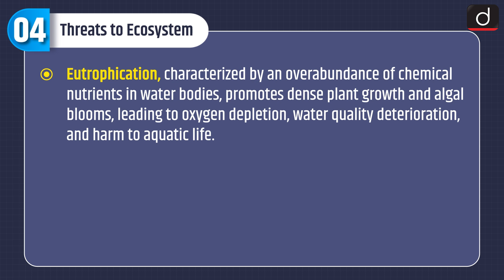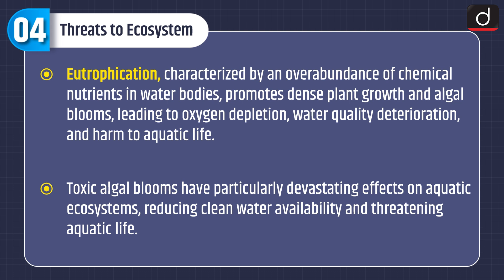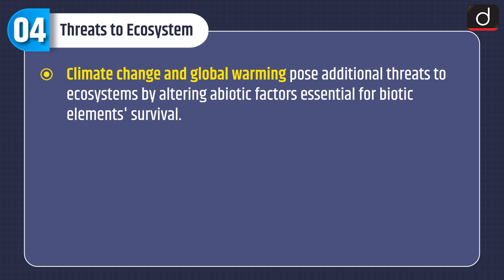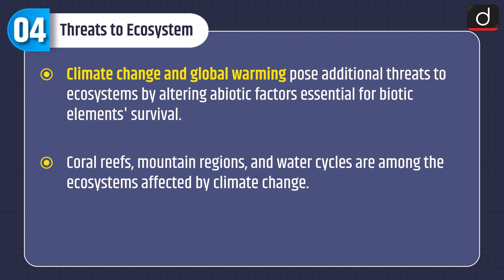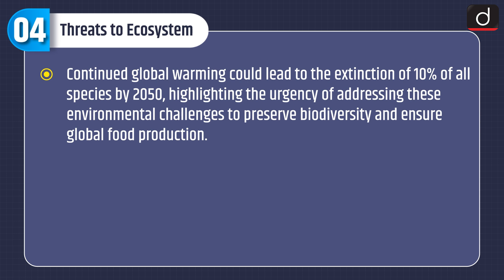Eutrophication, characterized by an overabundance of chemical nutrients in water bodies, promotes dense plant growth and algal blooms, leading to oxygen depletion, water quality deterioration and harm to aquatic life. Toxic algal blooms have particularly devastating effects on aquatic ecosystems, reducing clean water availability and threatening aquatic life. Climate change and global warming pose additional threats by altering abiotic factors essential for biotic elements' survival. Coral reefs, mountain regions and water cycles are among the ecosystems affected. Continued global warming could lead to the extinction of 10% of all species by 2050, highlighting the urgency of addressing these environmental challenges.